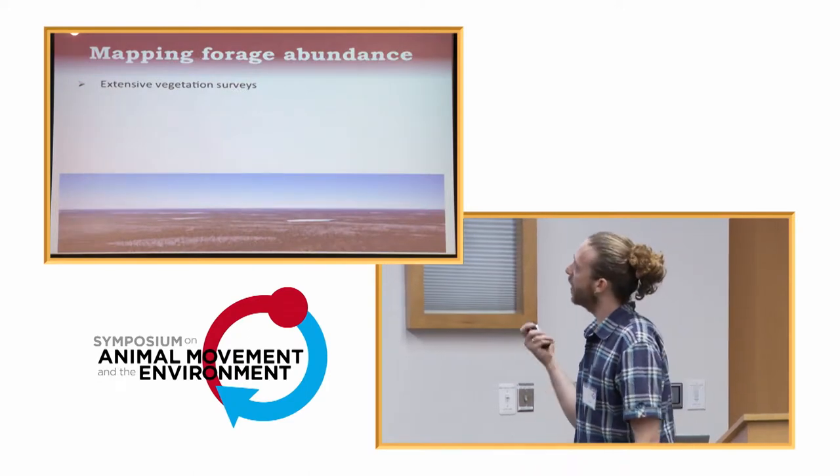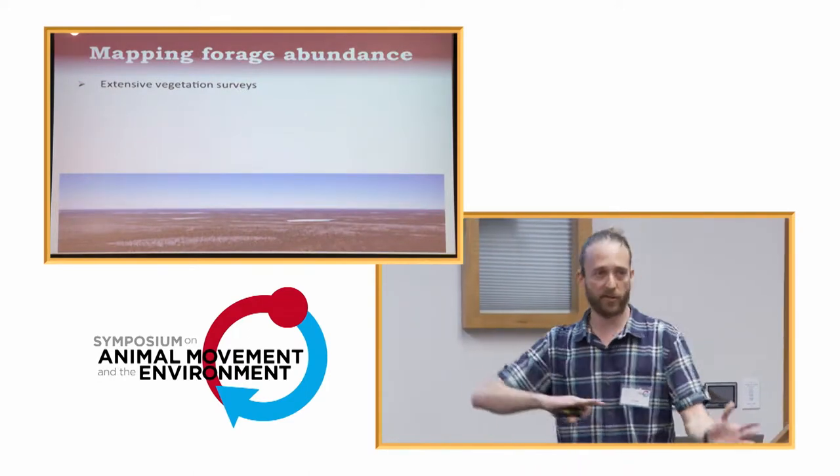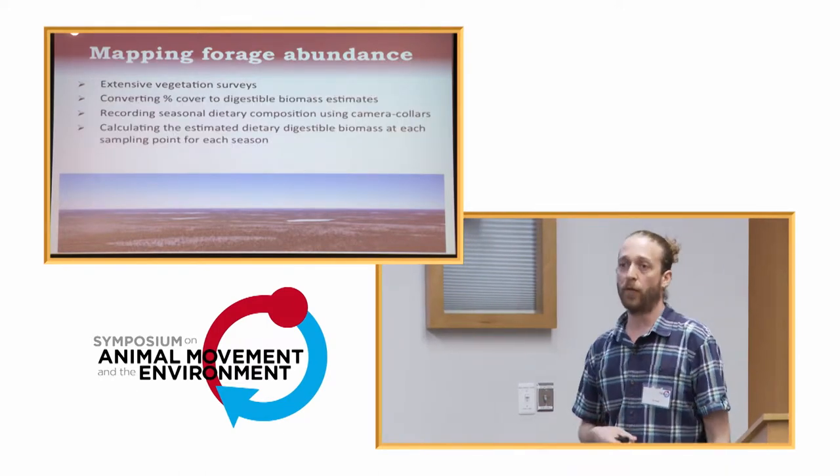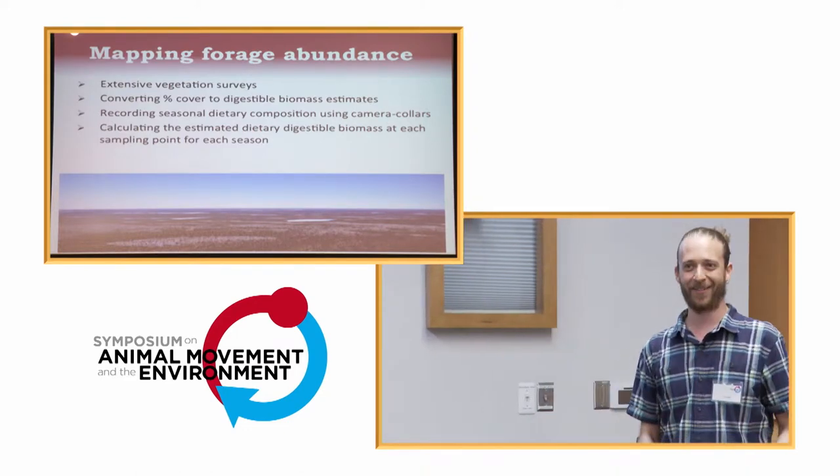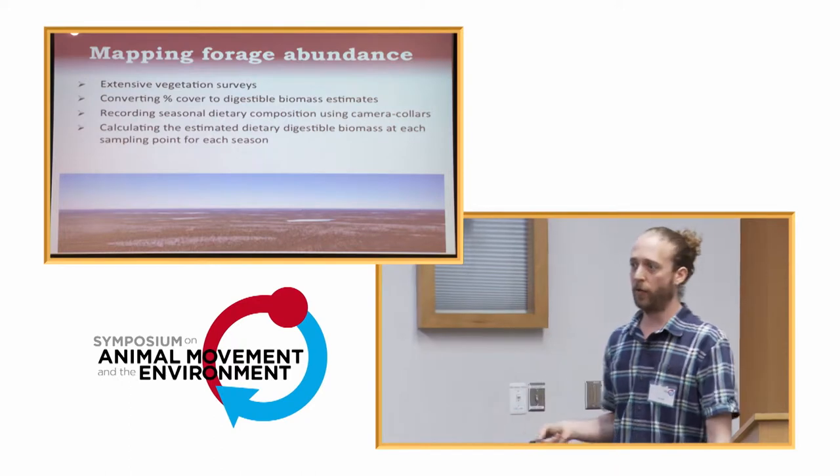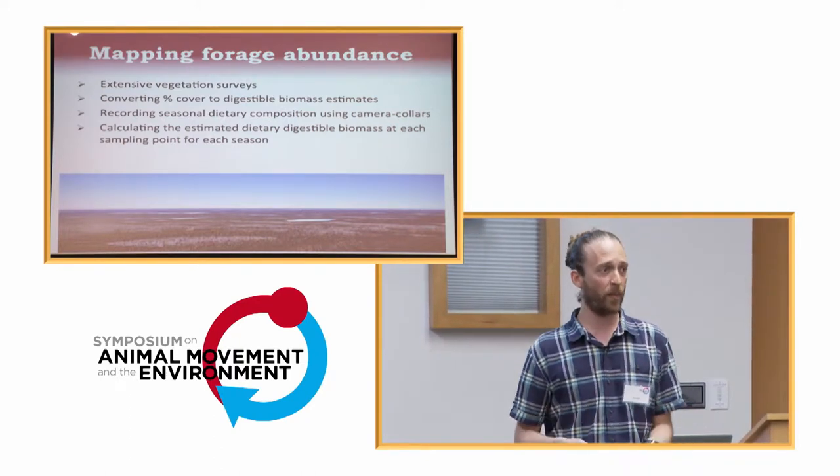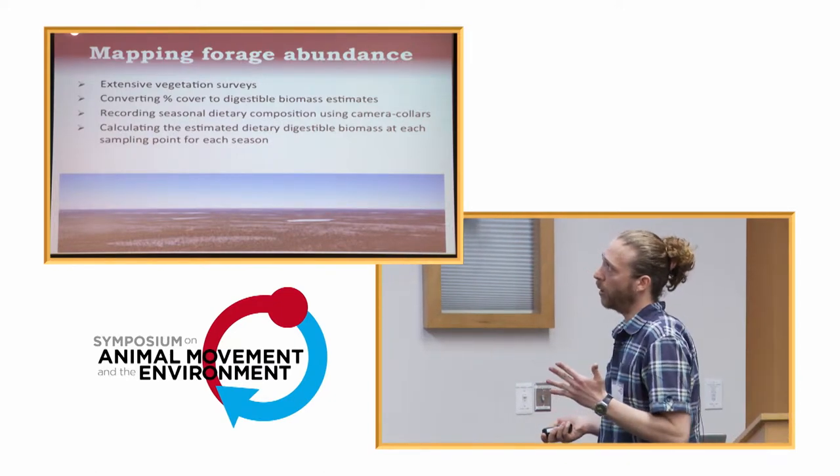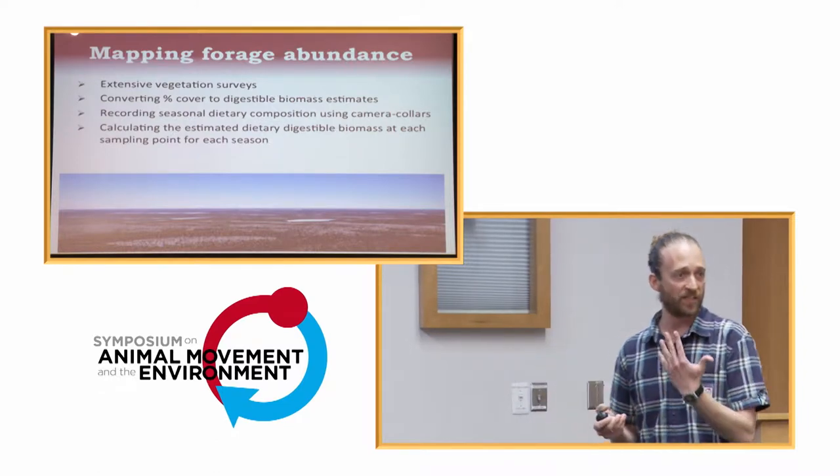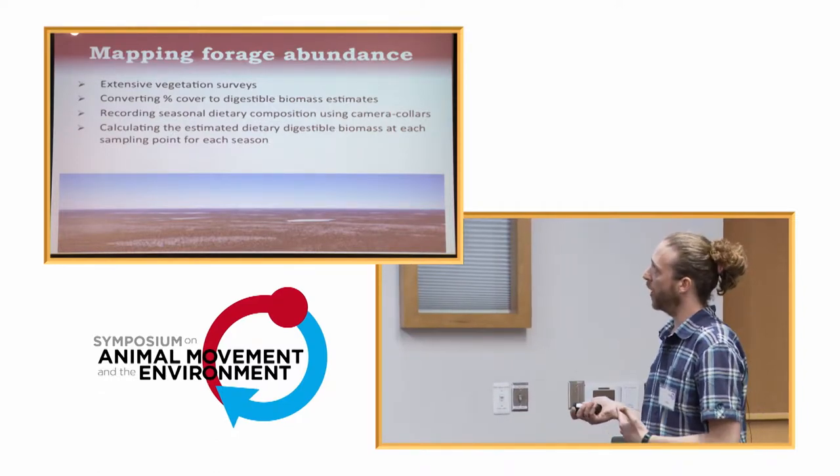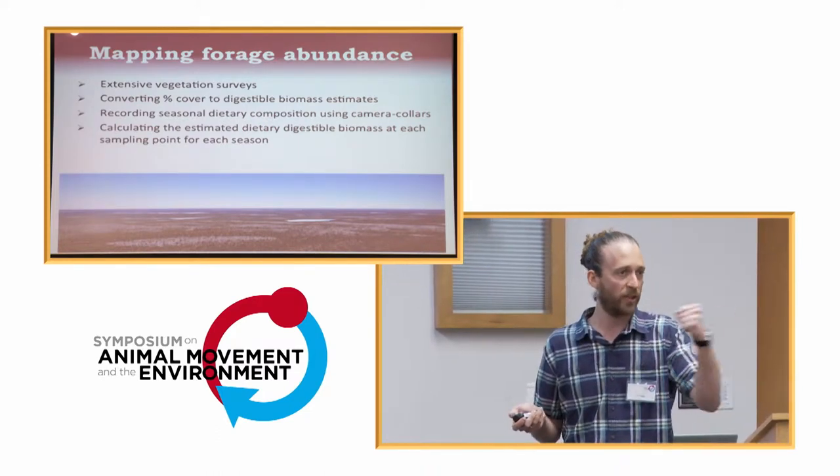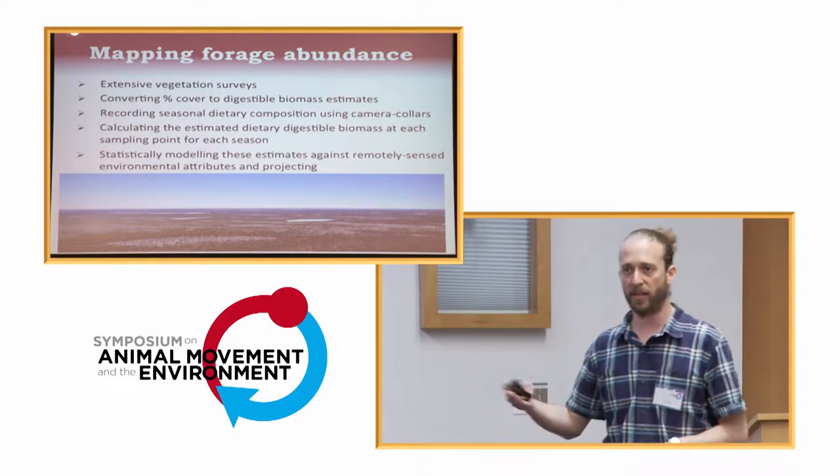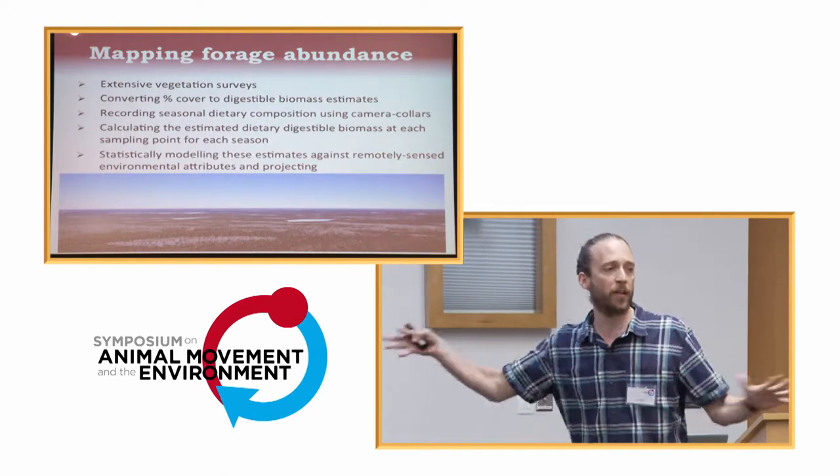We do the same exercise for forage abundance using completely different methods, but the principles are the same. We collect tons of data. We convert that data using other data into digestible biomass. We convert that digestible biomass into dietary digestible biomass using camera collars so we know what the animals are eating through the cameras. We know the diet composition so we can weigh what we have in each site based on that diet composition. And we're getting the dietary digestible biomass in each location that we sample in the landscape. And then we model these as function of all of those remote-sensed variables, NDVI, land cover, DEM, and we get predictive model of forage abundance.